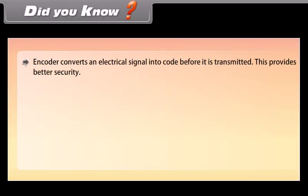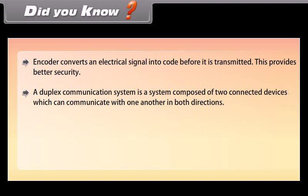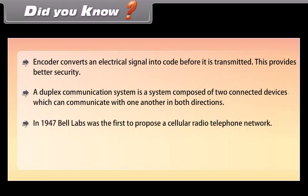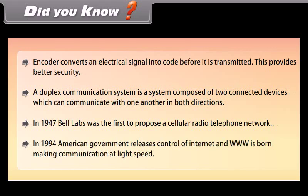Did you know: An encoder converts an electric signal into code before it is transmitted, providing better security. A duplex communication system is composed of two connected devices which can communicate with one another in both directions. In 1947, Bell Labs was the first to propose a cellular radio telephone network. In 1994, the American government released control of the internet and the WWW was born, making communication at light speed.